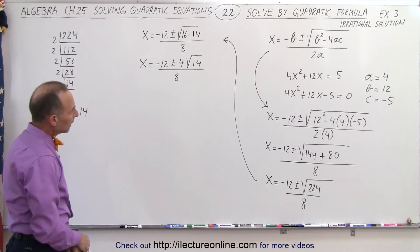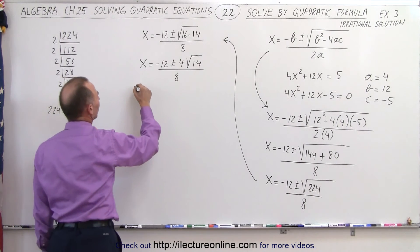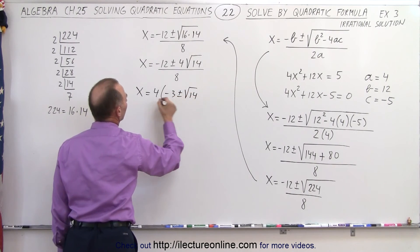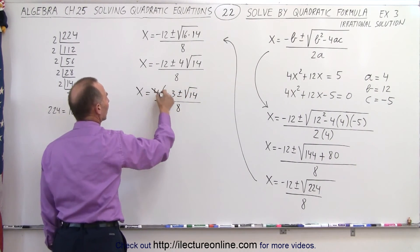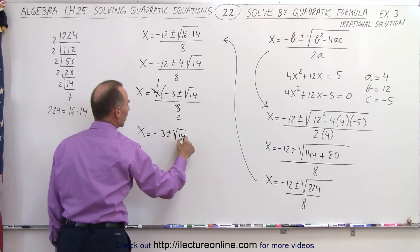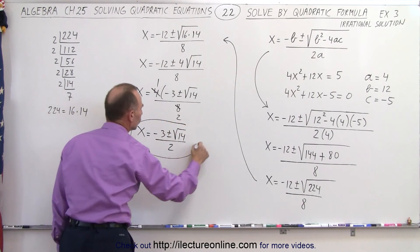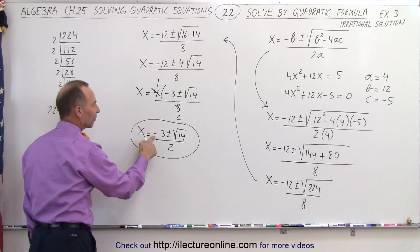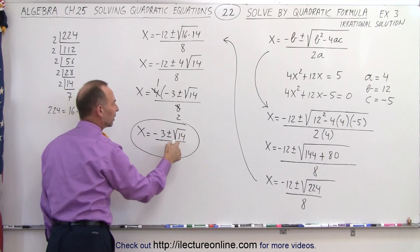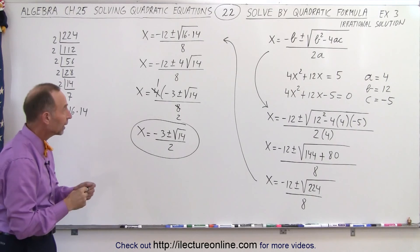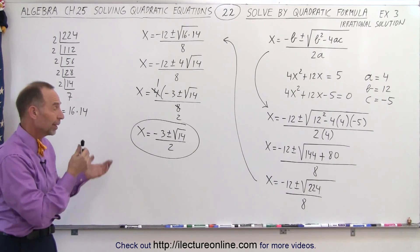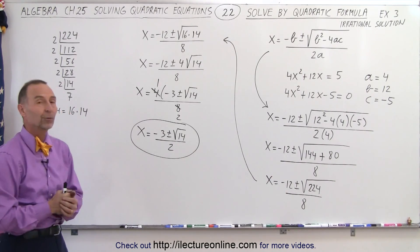Now I can factor out a 4: x = 4(−3 ± √14) ÷ 8. That simplifies — the 4 and 8 reduce — giving x = (−3 ± √14) ÷ 2. That gives us two solutions: x = (−3 + √14) / 2 and x = (−3 − √14) / 2. These are the two solutions of our quadratic equation. Notice they have a radical, so we have irrational solutions — but they are real solutions.